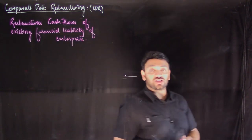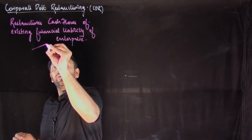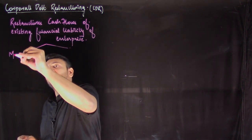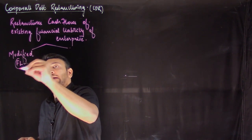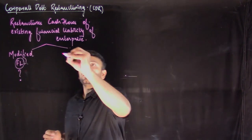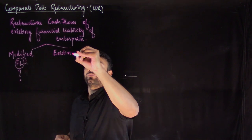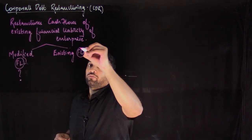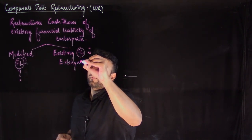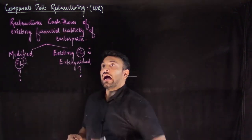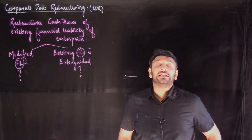At the time of restructuring, when I've restructured the existing cash flows, should I say that it is a modified contract — a modified financial liability? Or is the existing financial liability extinguished? I have to answer this question now. To answer this question, you have something called the 10% window.